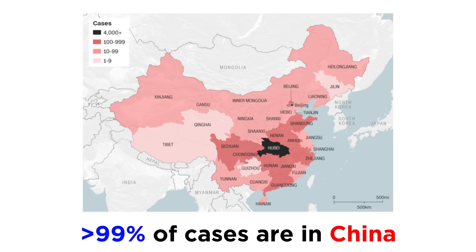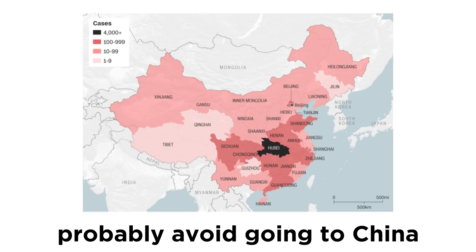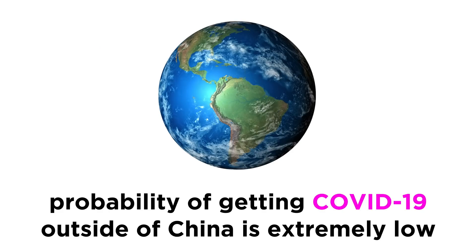Above all else, 99% of all cases are in China, and half of the rest are on one particular cruise ship. So maybe just don't go to China — that's really the solution here. If you have plans to go to China, probably don't. We do need to be concerned, but there's no need for panic. The probability of getting COVID-19 outside of China is extremely low, and we've seen this type of scare before with SARS and swine flu.